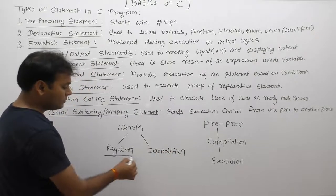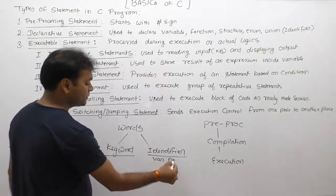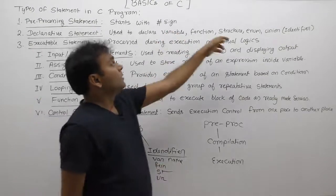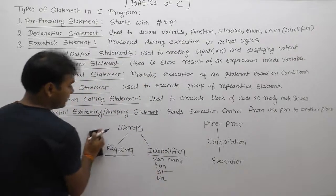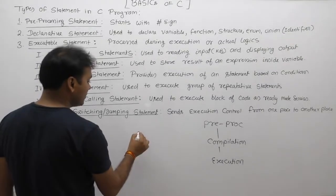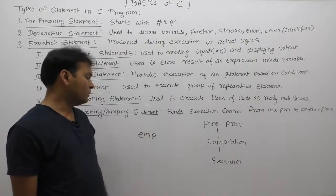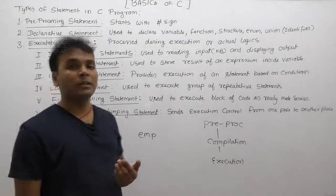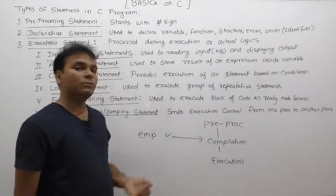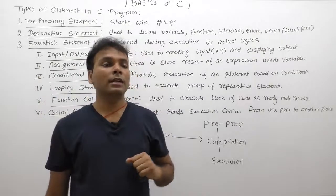Reserved words are considered keywords which are well known to the compiler, and user-specific words are known as identifiers. If you write an identifier like 'emp' or 'employee', the compiler needs to know whether it is a variable name, a function name, or a structure name. That information is supplied to the compiler with the help of declarations — it is complete information about user-created identifiers.